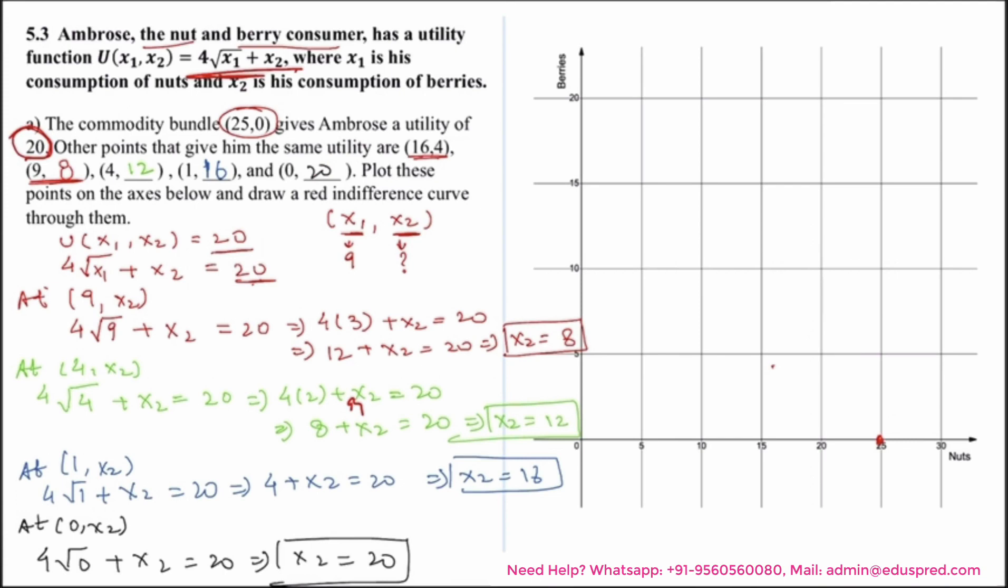Now let's plot all these points which are (25, 0) which I have already plotted, (16, 4), this is (9, 8), this is (4, 12), (1, 16), and (0, 20), which are the points we have already calculated. So if I join these points, since all these points are giving Ambrose the same level of utility which is 20, that means they will lie on the same indifference curve. So joining all these points I would be able to get my desired indifference curve, which is this red curve which passes through all these points which we just calculated.